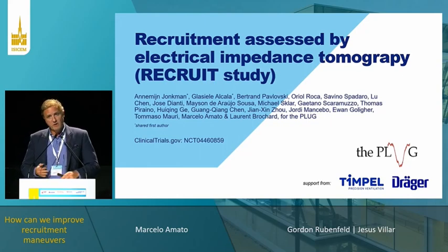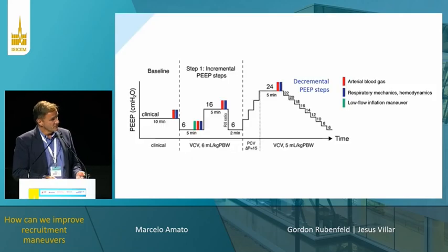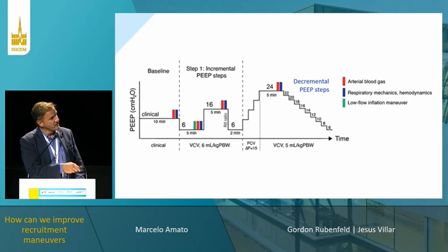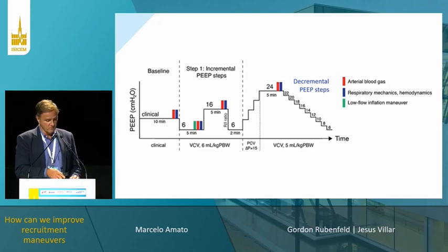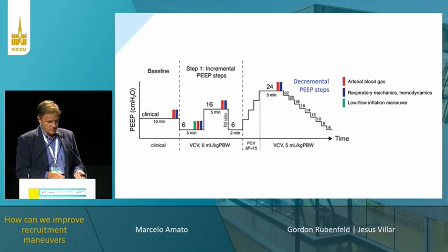We had other interesting outcomes to show. The whole protocol involved the clinical PIP, then decreasing PIP and increasing to 16. We measured the recruitment-to-inflation ratio as proposed by Laurent Brochard and Lu Chen, and then performed the recruitment maneuver in some patients up to 24 and others to 30.